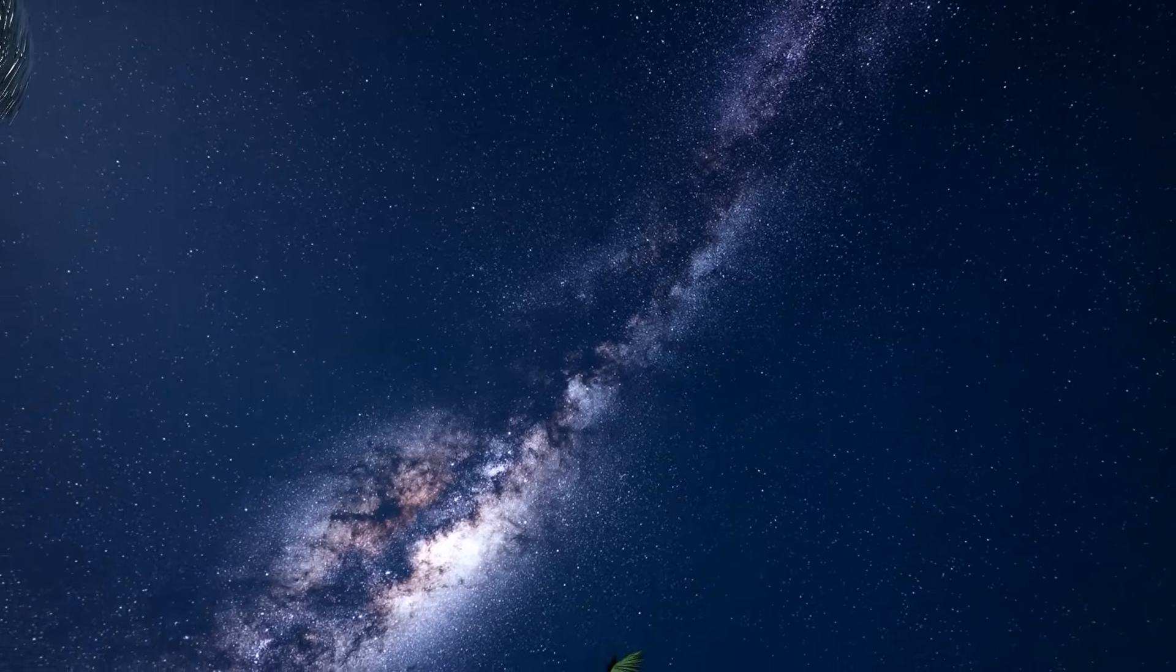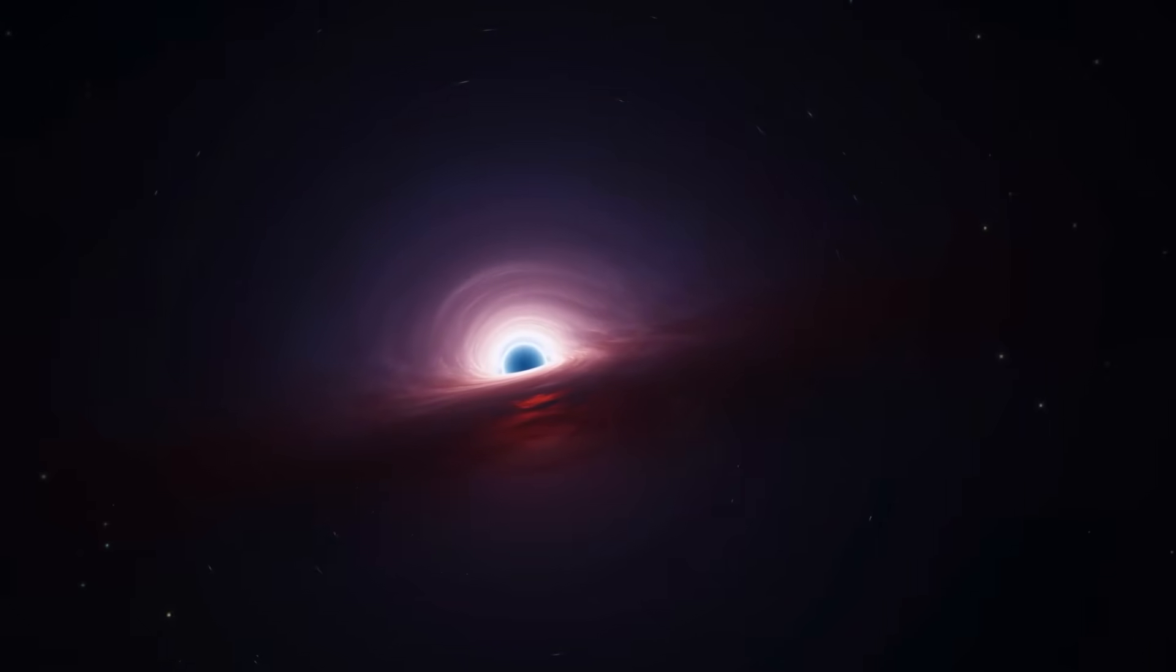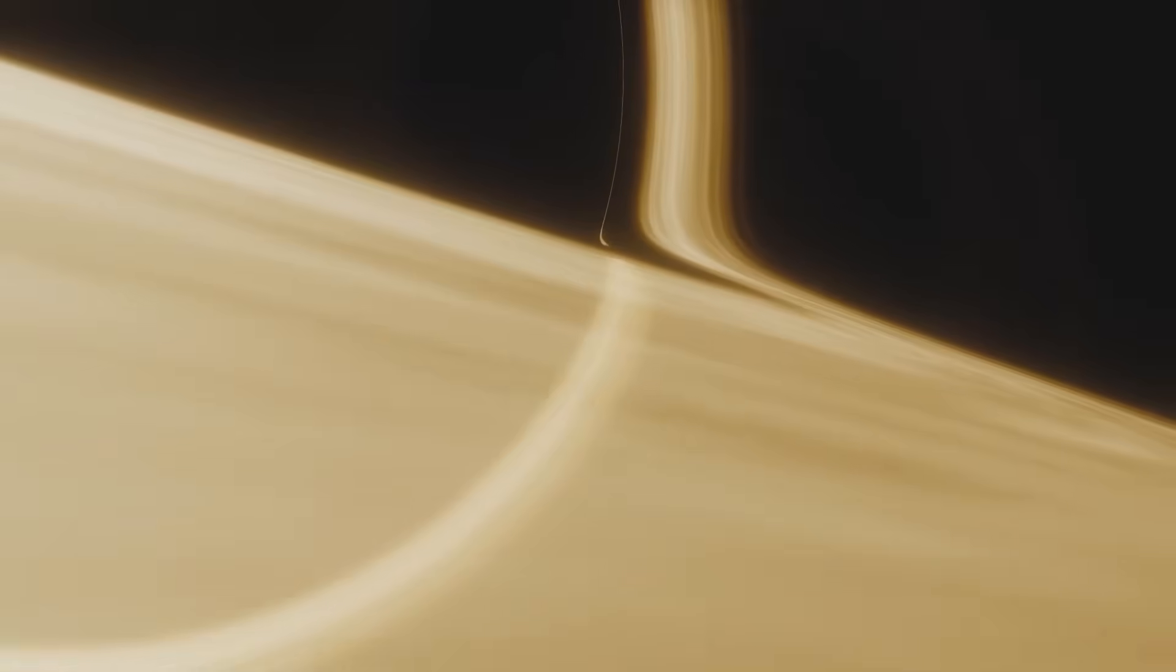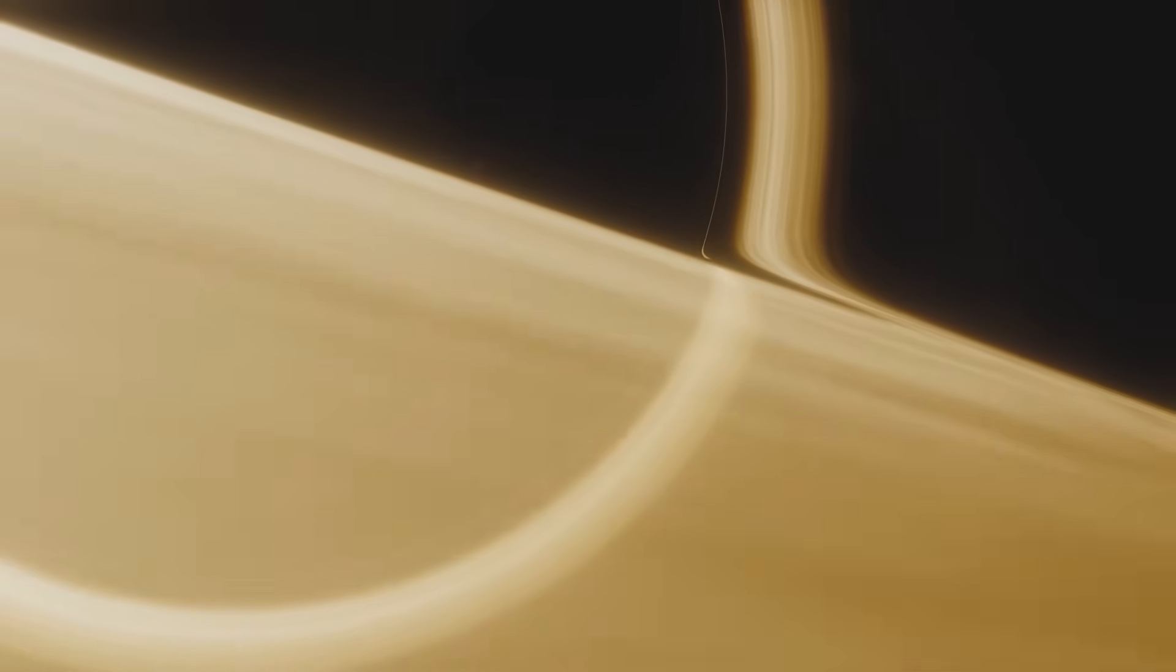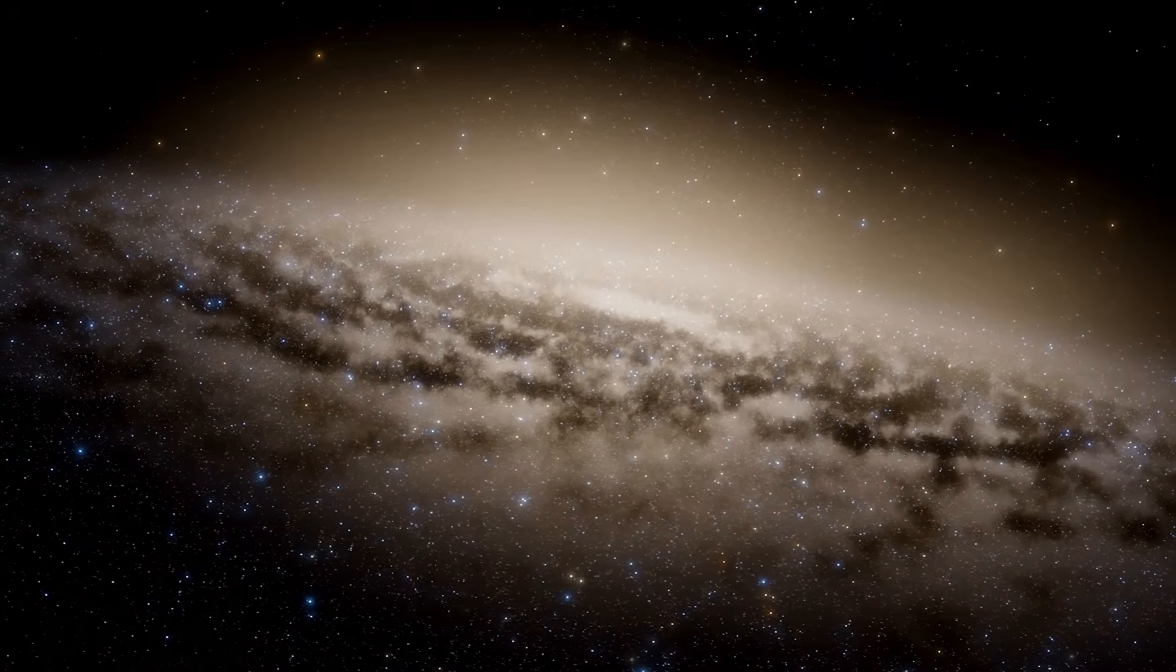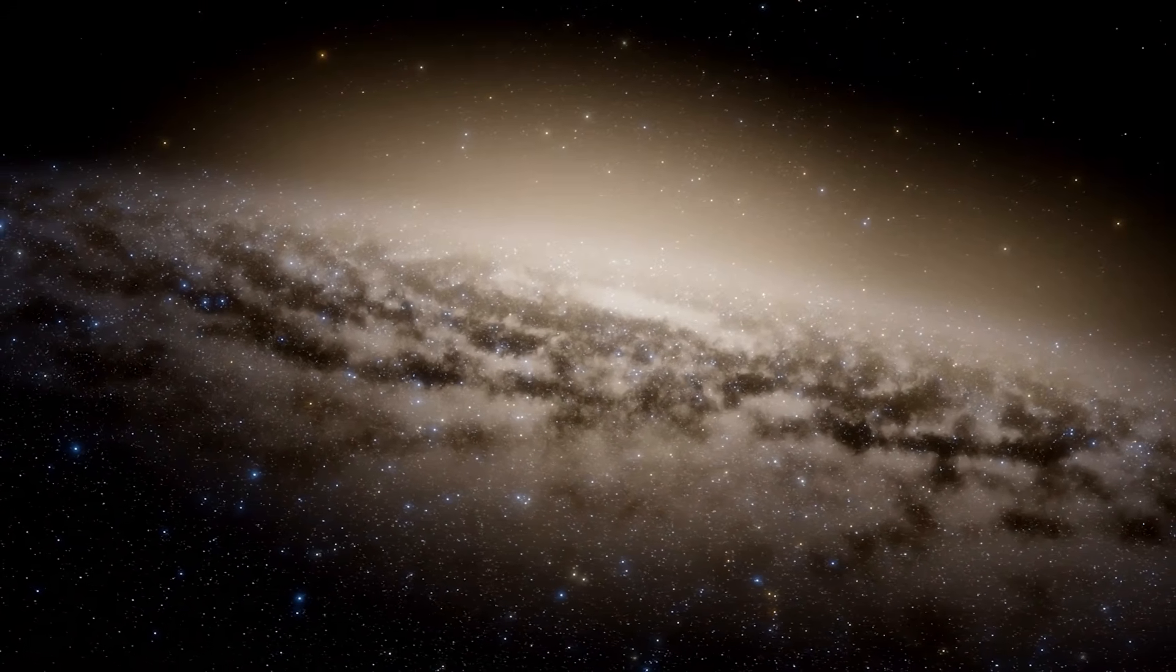There are four different types of black holes. Supermassive black holes have between 10,000 and several billion solar masses. Medium-mass black holes have only around 1,000 solar masses. Both types occur in the center of galaxies, but also sometimes freely in the universe.